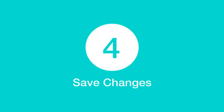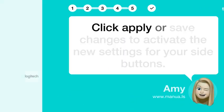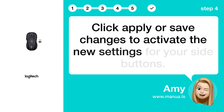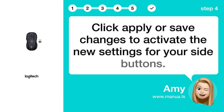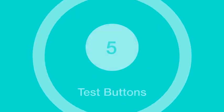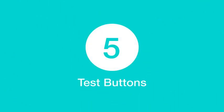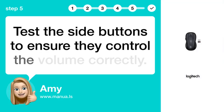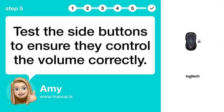Step 4: Save changes. Click Apply or Save changes to activate the new settings for your side buttons. Step 5: Test buttons. Test the side buttons to ensure they control the volume correctly.